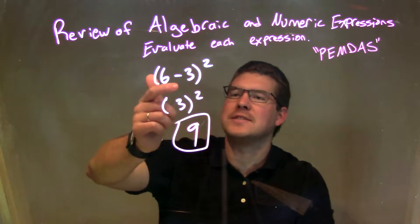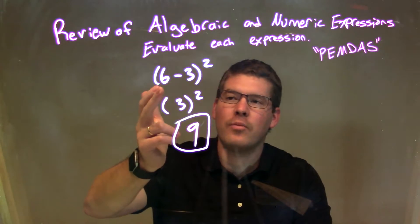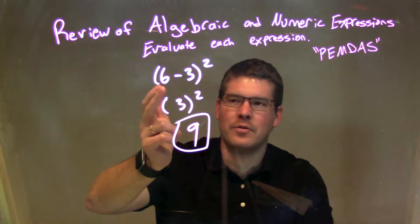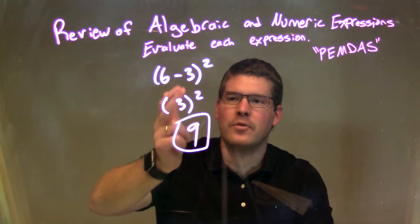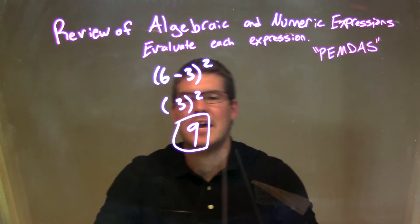So let's recap. We're given 6 minus 3 squared, and we've got to simplify this. Well, our parentheses tell us what we need to do first inside the parentheses. 6 minus 3 became 3. We then squared that 3, which gave us 9.